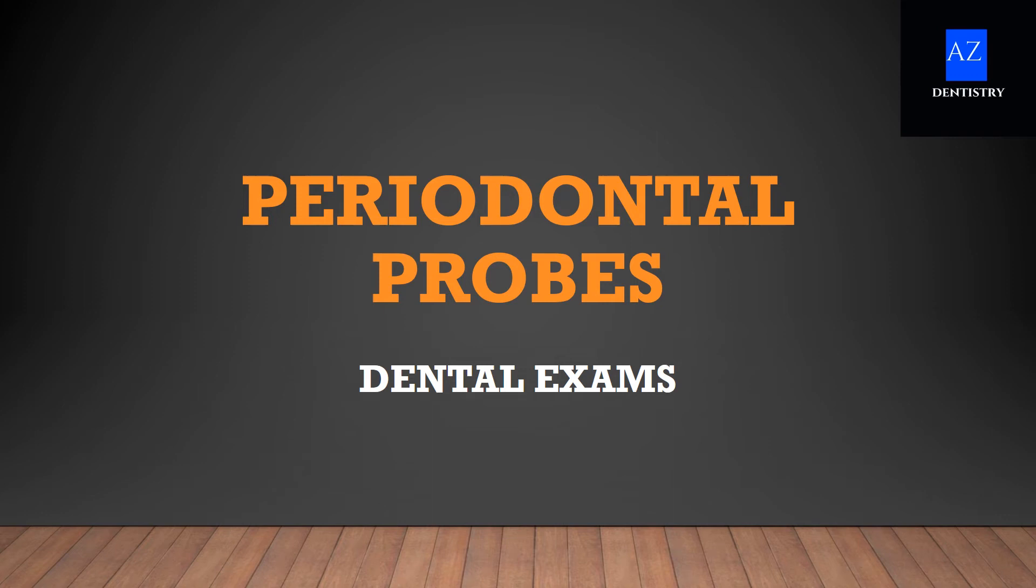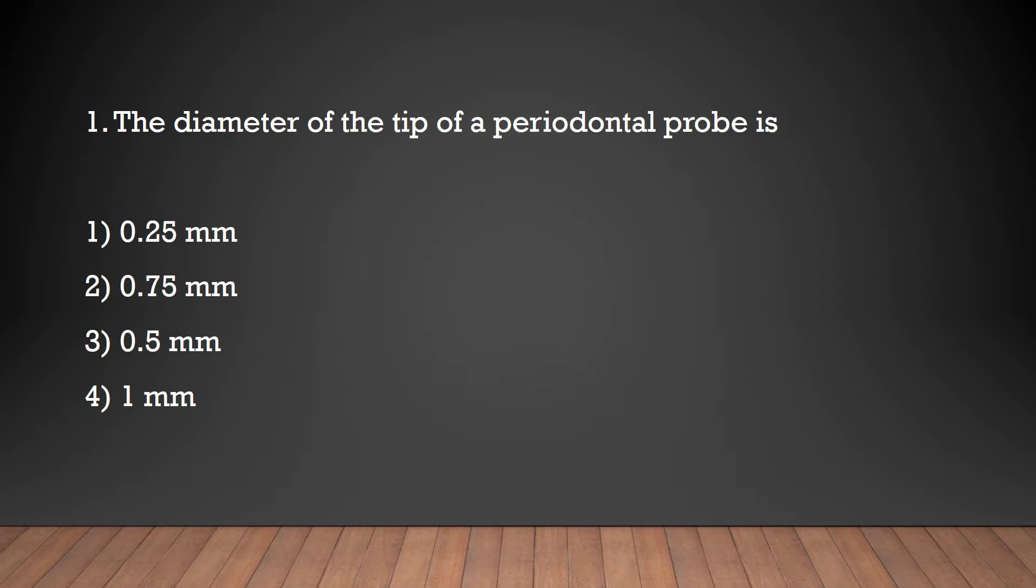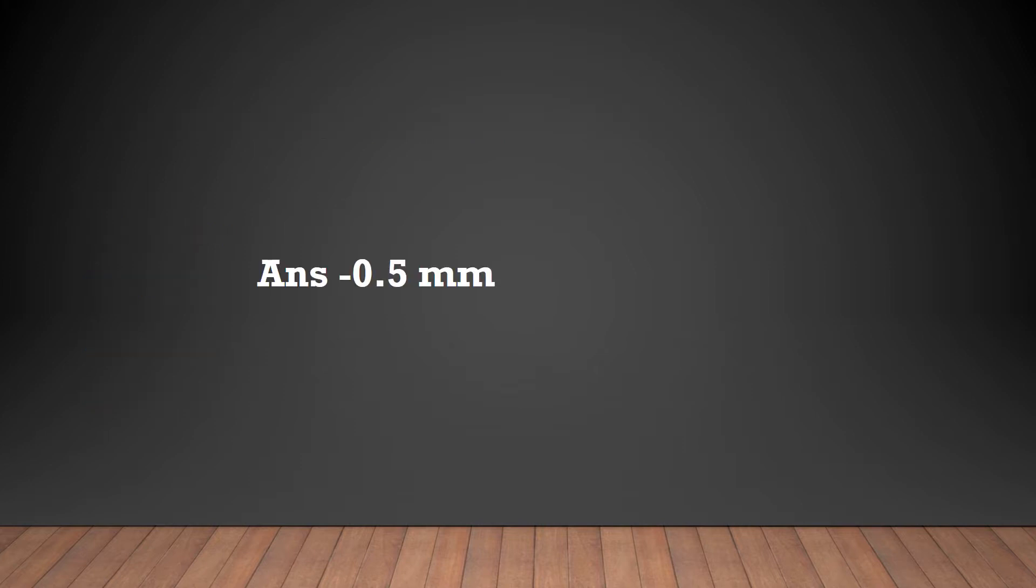Hello friends, welcome to HVC Dentistry. This video focuses on important MCQs related to periodontal probes. Question 1: The diameter of the tip of a periodontal probe is: 0.25 mm, 0.75 mm, 0.5 mm, or 1 mm? Answer: 0.5 mm.